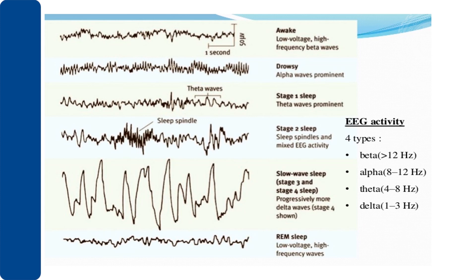And then REM sleep. This is similar to an awake state — low voltage, high frequency waves. Therefore, REM sleep is also known as paradoxical sleep.